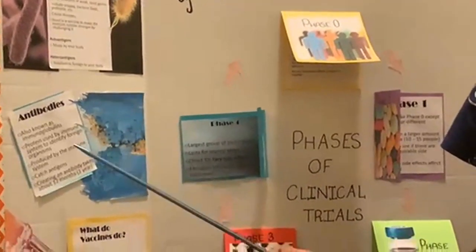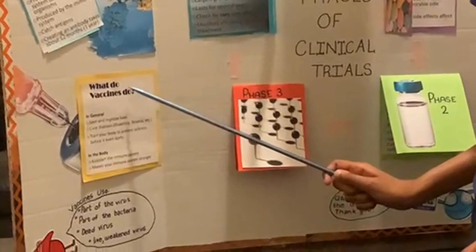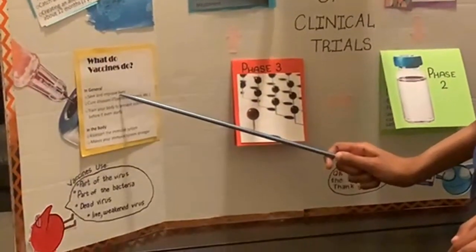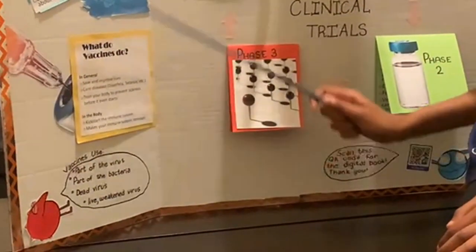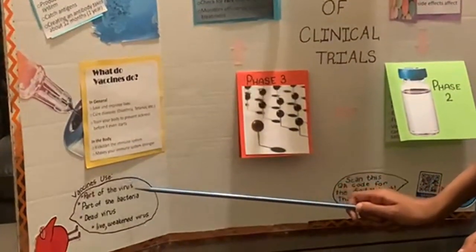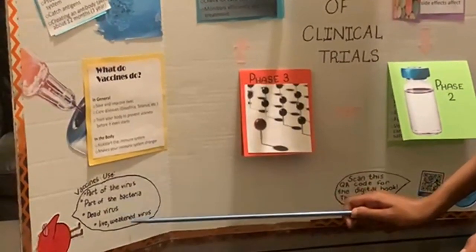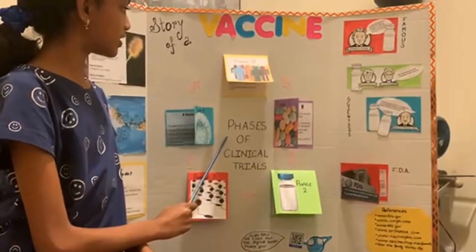But what happens if antibodies can't take on the challenge? That's where vaccines step in. They save and improve lives by kick-starting the immune system and making it stronger. Vaccines use part of the virus or bacteria, a dead virus or alive, to try to give up the phases of clinical trials.